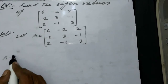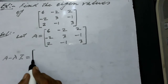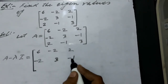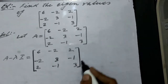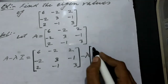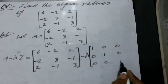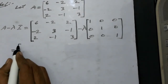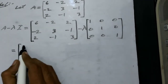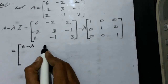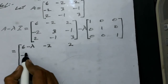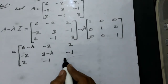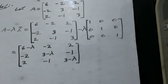A minus lambda I is equal to the matrix with entries: (6 minus lambda), minus 2, 2; minus 2, (3 minus lambda), minus 1; 2, minus 1, (3 minus lambda). This is the characteristic matrix.